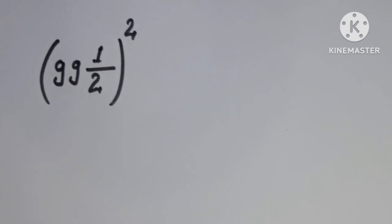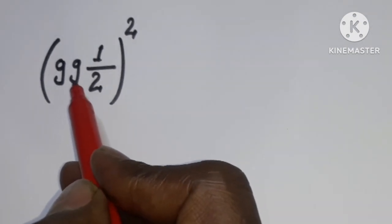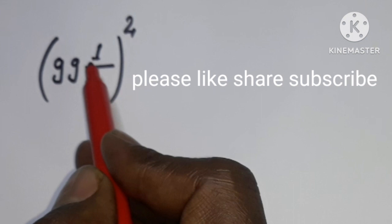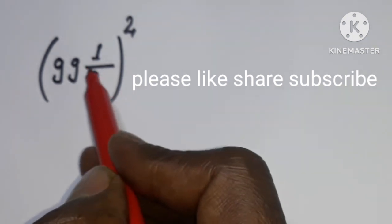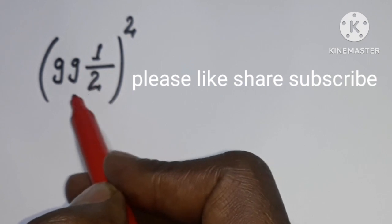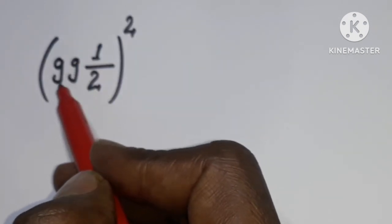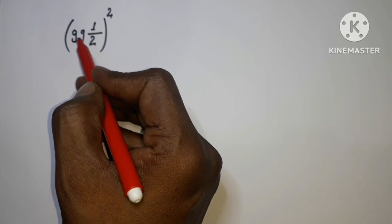I'm just going to start this question. Before proceeding, we will first focus on what we have here. We have 99 and 1/2. This is a mixed fraction, and 99 is a bigger number, so let me explain how we can proceed.